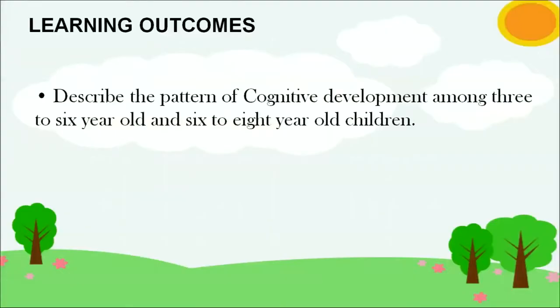In this particular video, I will be talking about cognitive development as an important domain for these two age brackets. And once you thoroughly go through this video, you will be able to describe the patterns of cognitive development among 3 to 6 year old children and 6 to 8 year old children. This is the learning outcome from this video.